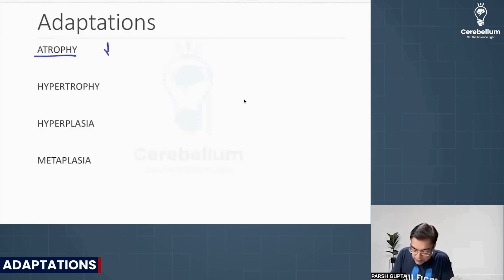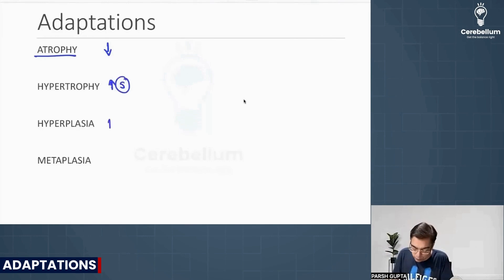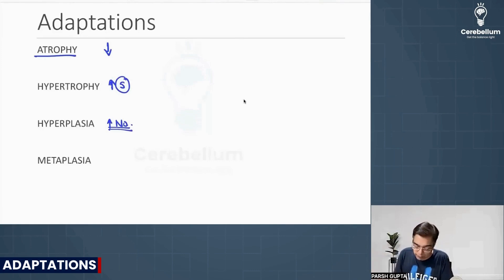Atrophy simply means a decrease in the size and function of a cell. Hypertrophy refers to an increase in the size of the cell as well as an increase in function. Hyperplasia refers to an increase in the number of cells in a given tissue, and metaplasia would simply be a change.